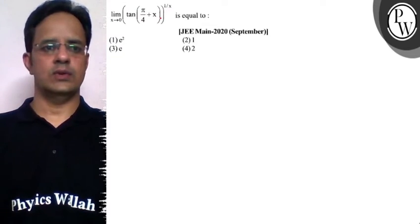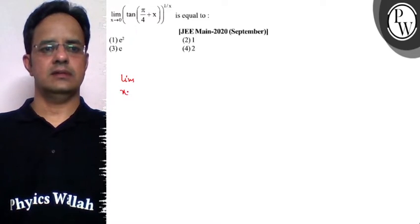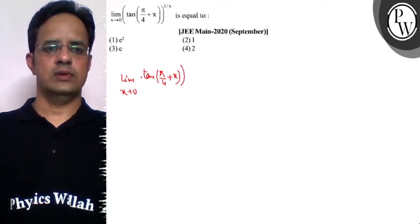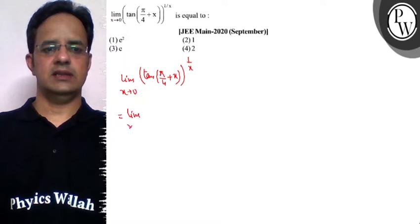It is equal to limit x tending to 0, tan(π/4 + x) raised to the power 1 upon x.